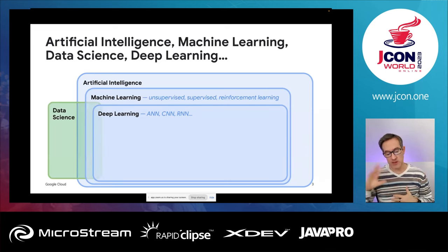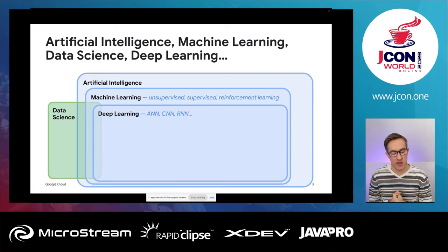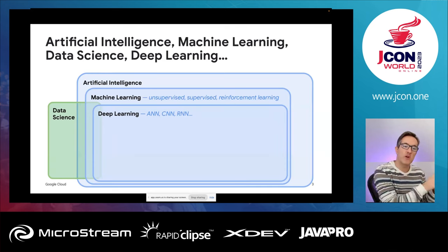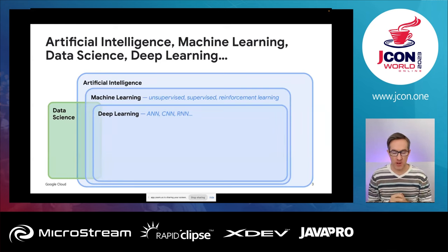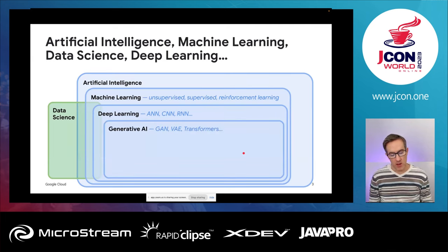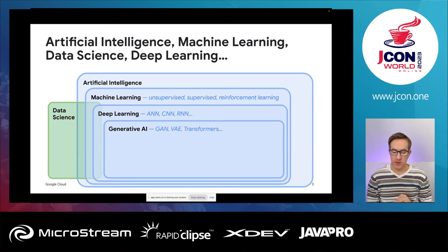Deep neural networks are deep in the sense that there are tons of neurons layered in many, many layers. There are different algorithms for that — I won't dive too much into the details. There's also data science, which is all about artificial intelligence, but there are other aspects to it, like how you clean the data, which is not necessarily ML algorithms per se. And then as we zoom in, there's generative AI, again with different neural network architectures, like transformers — that's the one we're going to have a look at.